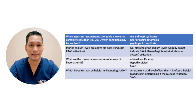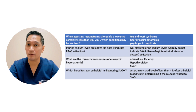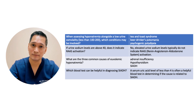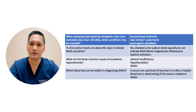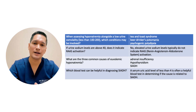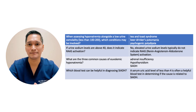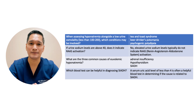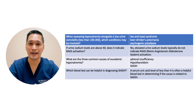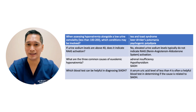These conditions are associated with hyponatremia and a low urine osmolality. Urine sodium levels above 40 do not indicate RAS activation — elevated urine sodium typically indicates no RAS activation. The three common causes of euvolemic hyponatremia are adrenal insufficiency, hypothyroidism, and SIADH. A serum uric acid level of less than 4 is a helpful blood test in determining if the cause is related to SIADH.